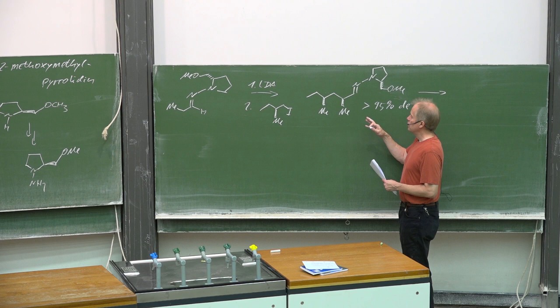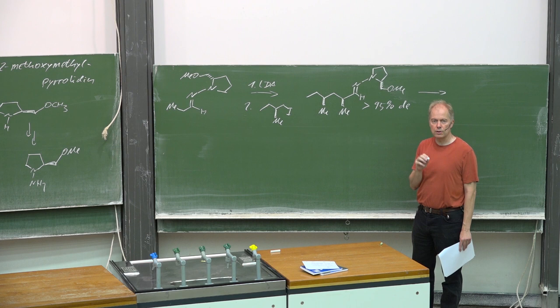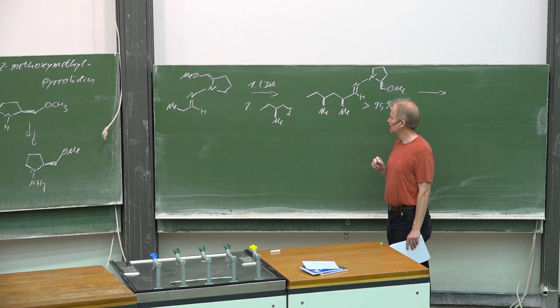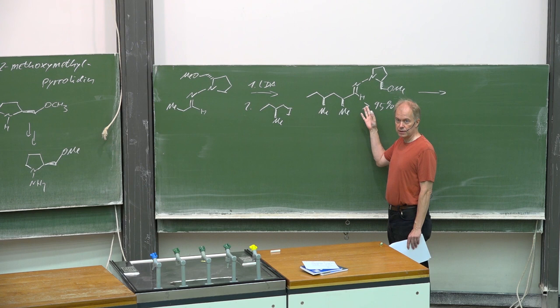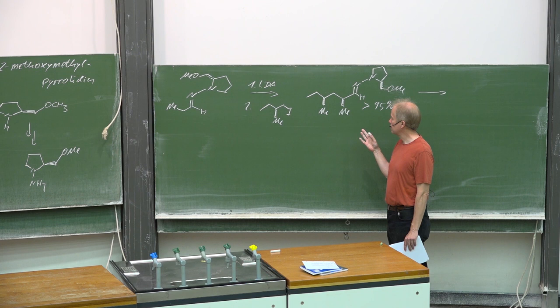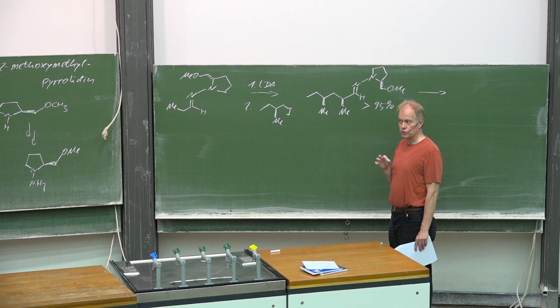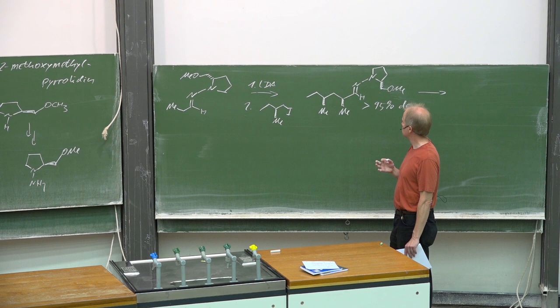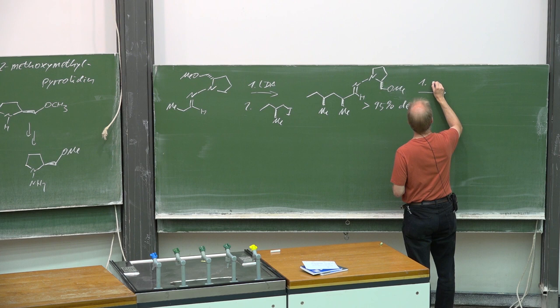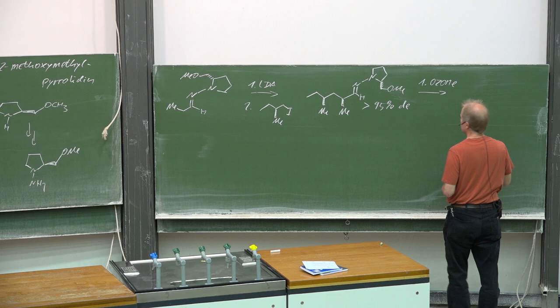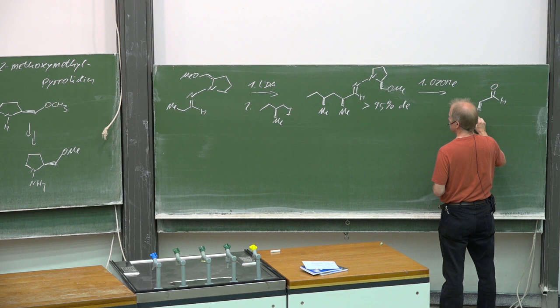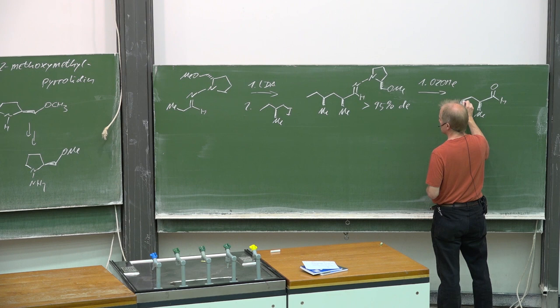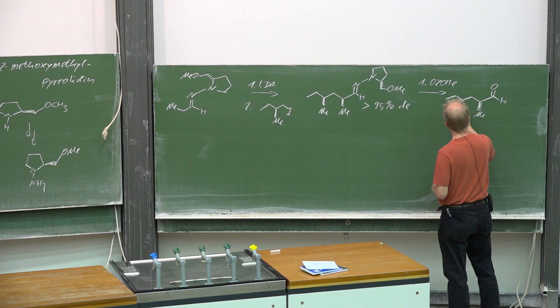You avoid the simple hydrolysis of that imine functionality because you can imagine you would get the aldehyde, and under basic or acidic conditions the alpha position would epimerize. So you have to do that under strictly neutral conditions, and best works an ozonolysis. Then you get to that aldehyde, keeping the stereoselectivity here in the alpha position intact.